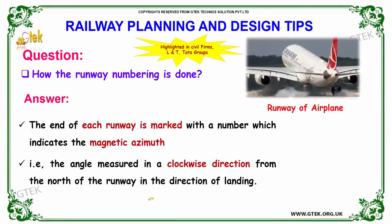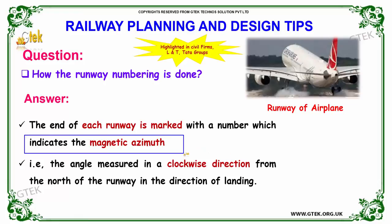The next question: how is runway numbering done? The end of each runway is marked with a number which indicates the magnetic azimuth — that is, the angle measured in a clockwise direction from north — of the runway in the direction of landing.